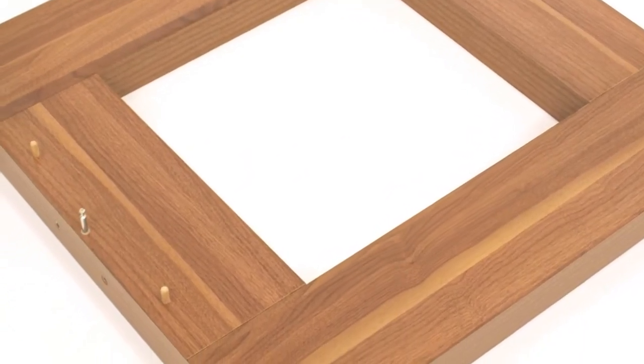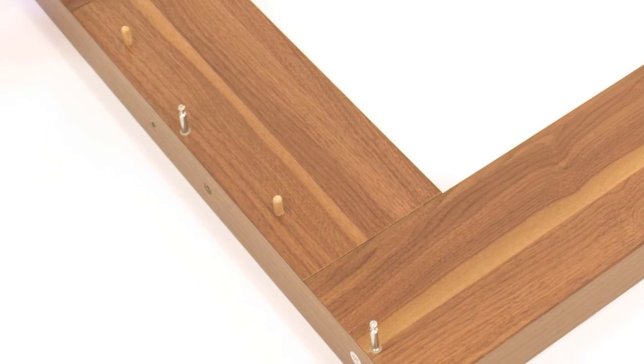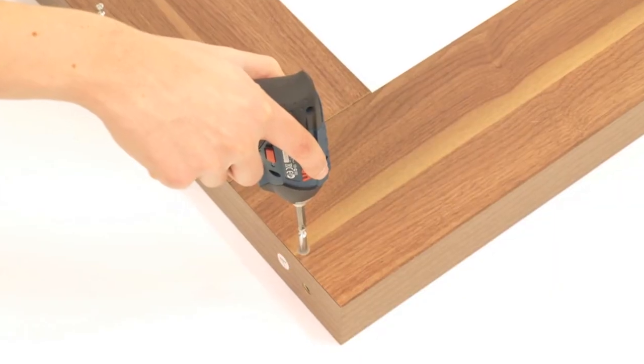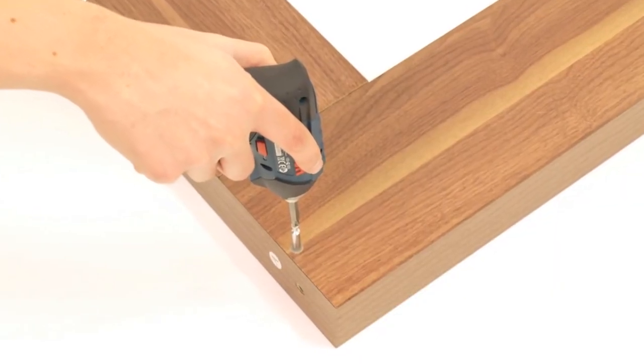Put the drawers to one side and insert the wooden dowels into the large holes of the leg. Then, screw the metal dowels into the small holes.